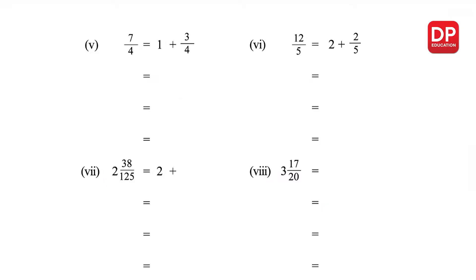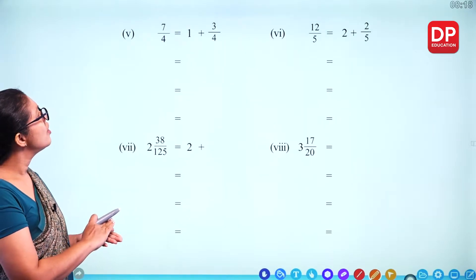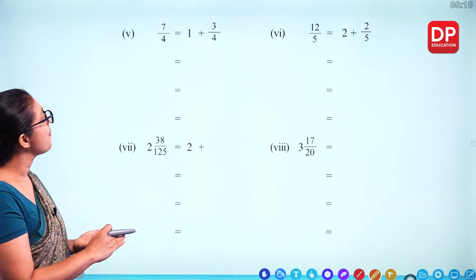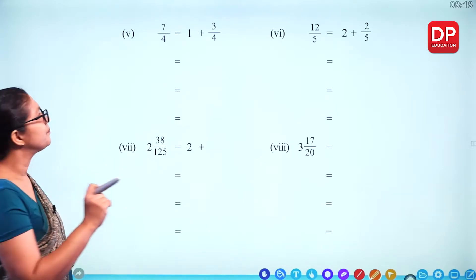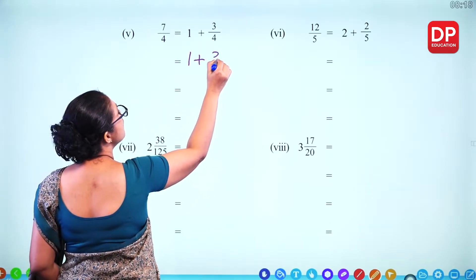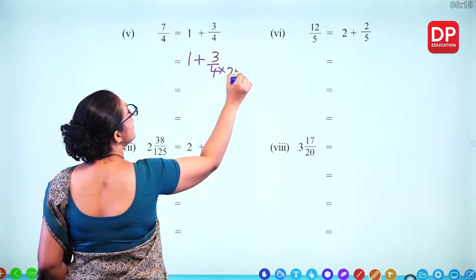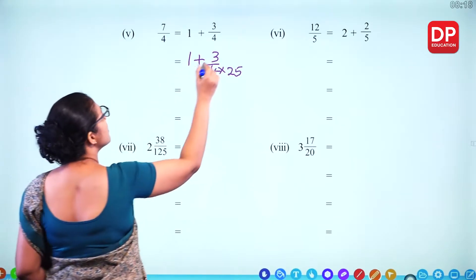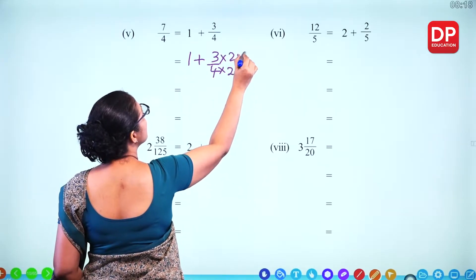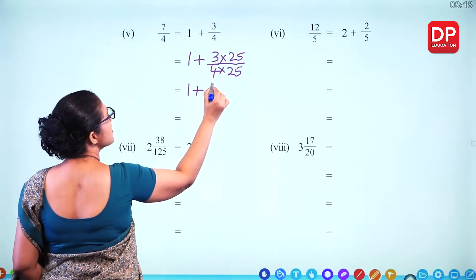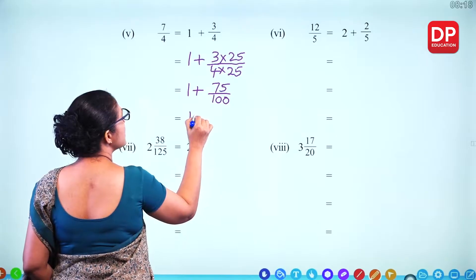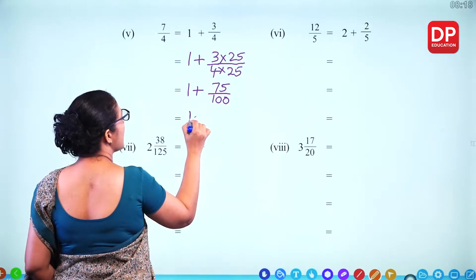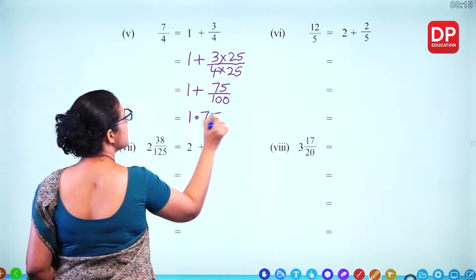For 7 over 4, which is an improper fraction, convert to a whole number and proper fraction: 7 over 4 = 1 and 3 fourths. Then 1 plus 3 fourths — multiply by 25: 4 times 25 is 100, giving 1 plus 75 over 100. What is 75 over 100? That is 0.75. So the answer is 1.75.